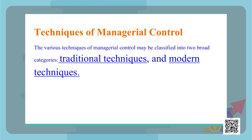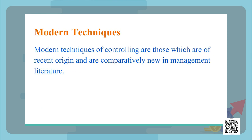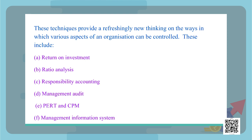Now let us discuss some techniques of managerial control. The various techniques may be classified into two broad categories: traditional techniques and modern techniques. Traditional techniques are those which have been used by companies for a long period of time and are still being used. Modern techniques are those which have come into use recently and their use has been increasing day by day, providing refreshingly new thinking on ways to control various aspects of an organization.